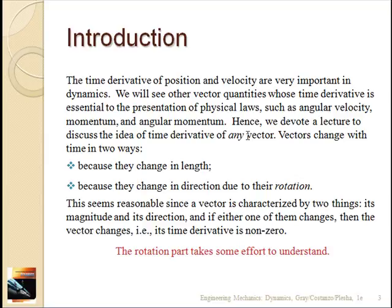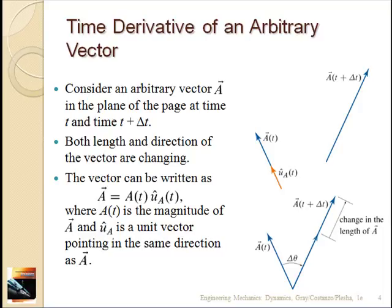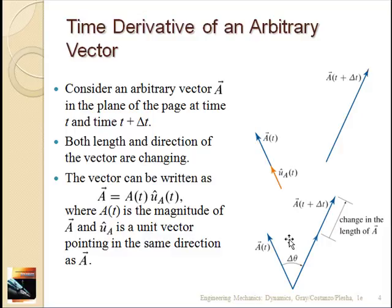It's this direction part that makes it a little bit tricky. Think of a vector a, which has some direction denoted by unit vector û_a. At time t plus delta t, it moves — if this is a at time t, at t plus delta t it might rotate to this position and get longer. If you put the tails together of these two vectors, a rotated through some angle delta theta and got longer. So there's a component of the time derivative due to the magnitude change and a component due to the rotation.